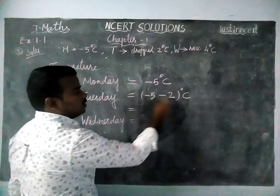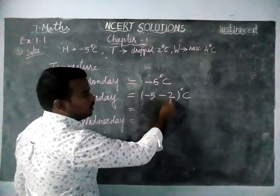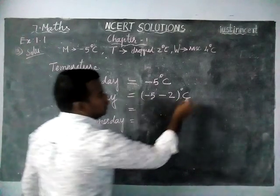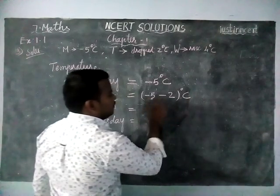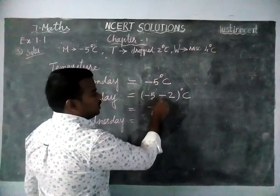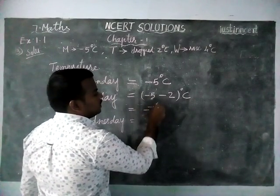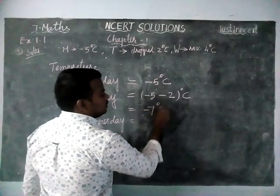Both signs are also minus. So we have to add these two. When we add them we get 7, and both are minus. So we get minus 7 degrees Celsius on Tuesday.